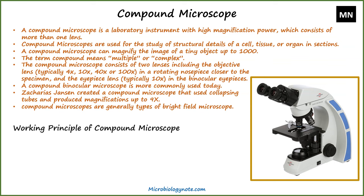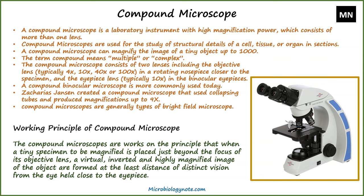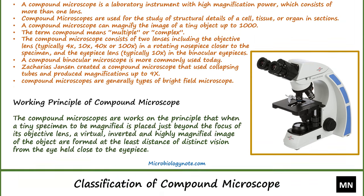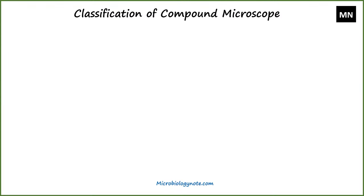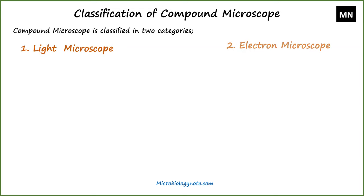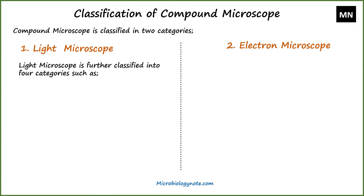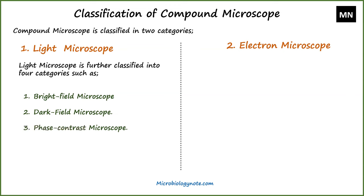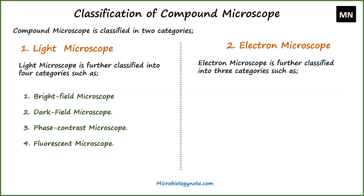We will now learn how the compound microscope works. Compound microscopes work on the principle that when a tiny specimen to be magnified is placed just beyond the focus of its objective lens, a virtual, inverted and highly magnified image of the object is formed at the least distance of distinct vision from the eye held close to the eyepiece. A compound microscope is classified into two categories: light microscope and electron microscope. A light microscope is further classified into four categories: bright field, dark field, phase contrast, and fluorescent microscope. The electron microscope is classified into three categories: scanning, transmission, and confocal microscope.